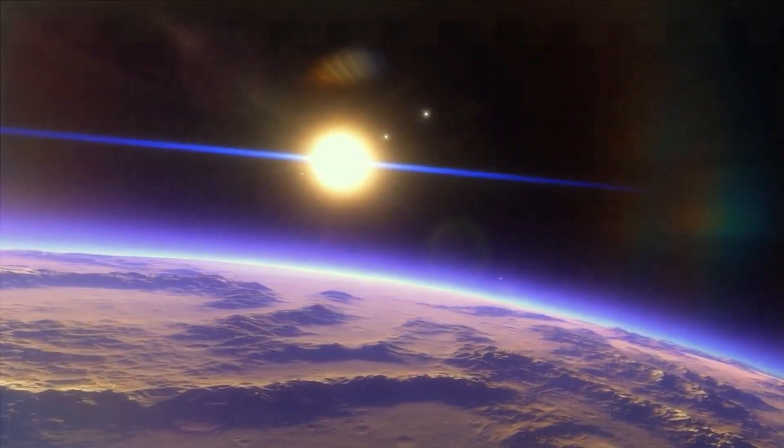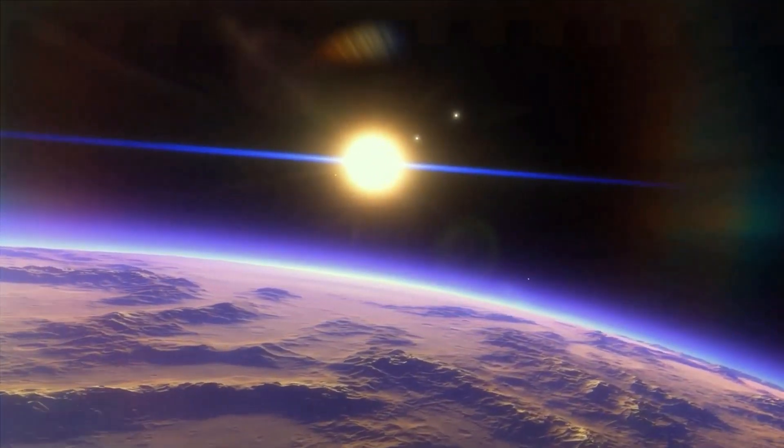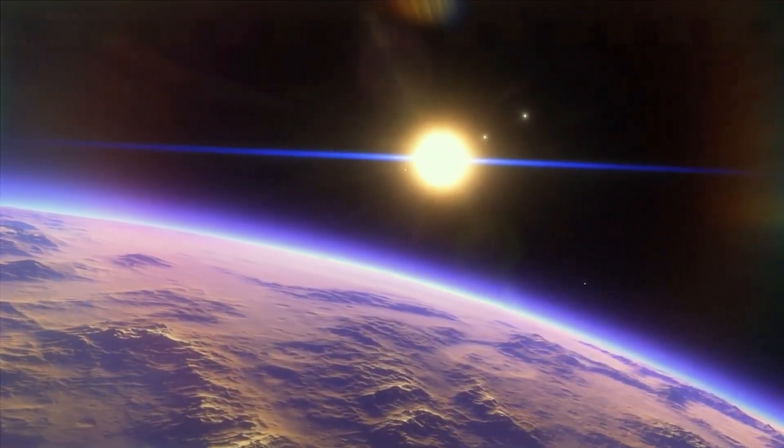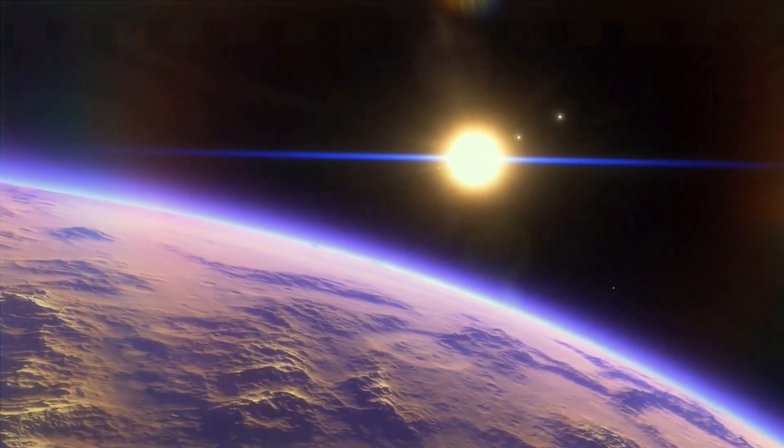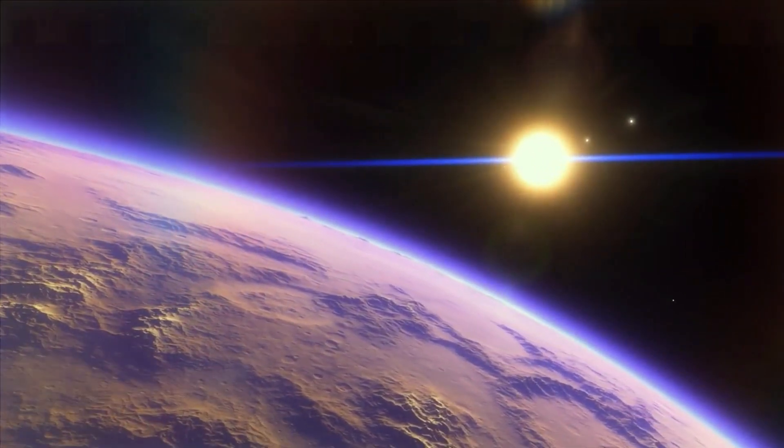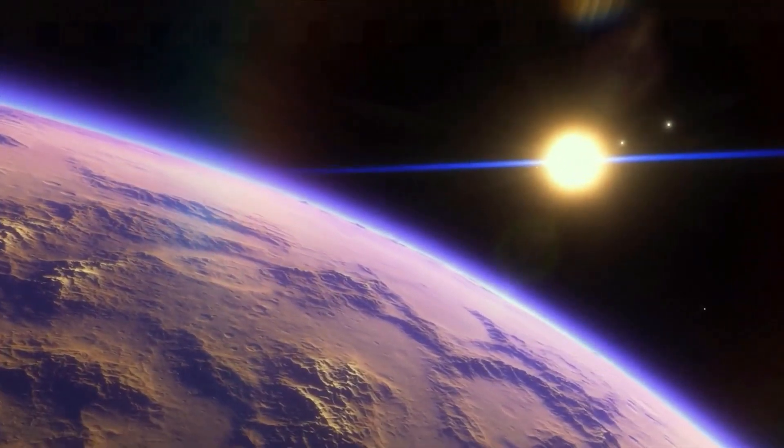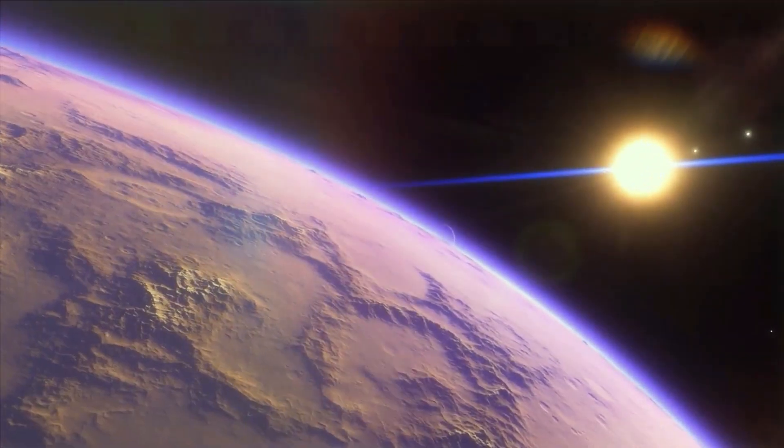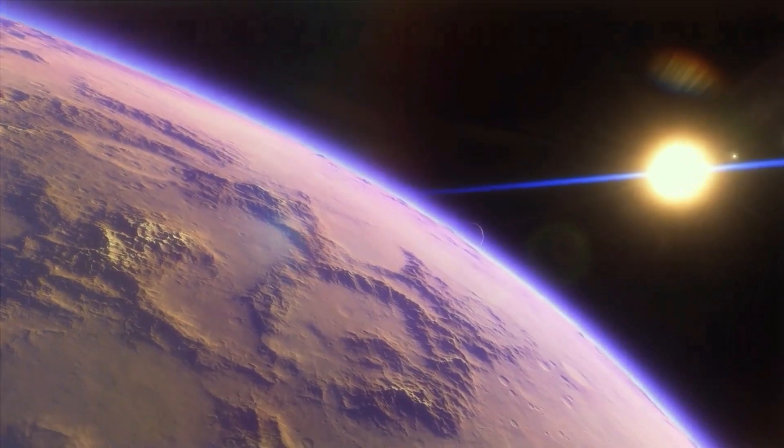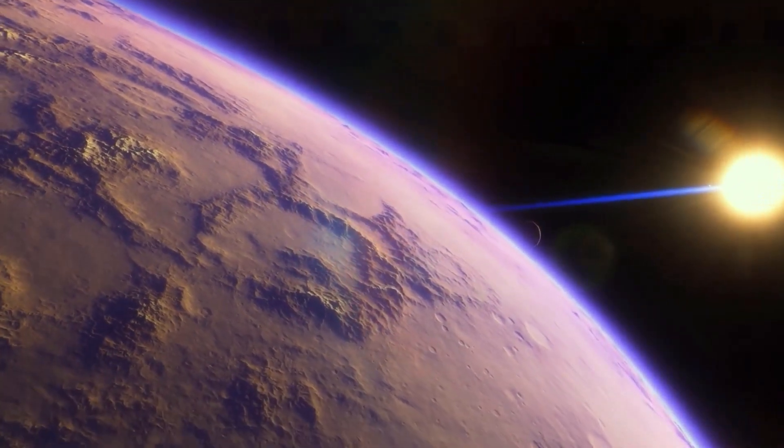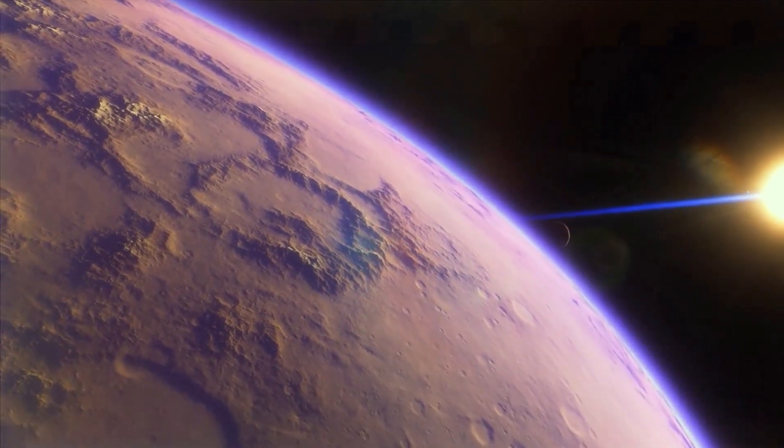The other is Vy Canis Majoris, which is located in the constellation Canis Major. It is one of the largest stars known with a radius of up to 2100 times that of the sun. It is also one of the most luminous stars known with a luminosity that is 500,000 times that of the sun. While Vy Canis Majoris is not currently in danger of exploding as a supernova, it is still an important object of study for astronomers who are interested in understanding the processes that govern the evolution of massive stars.